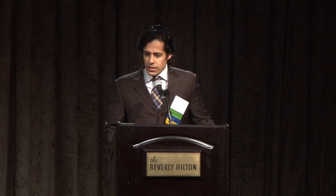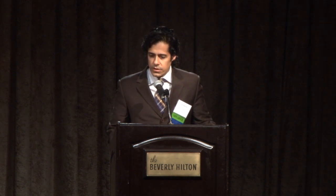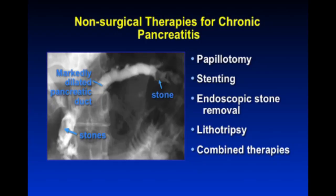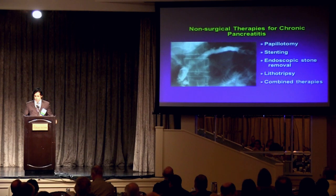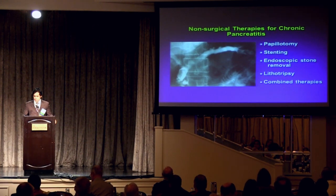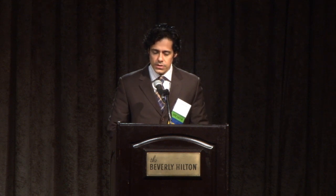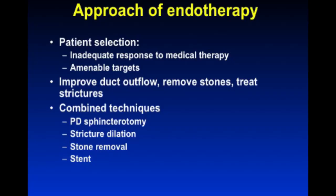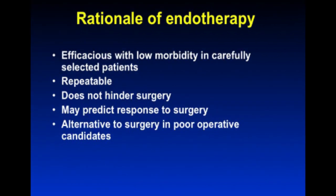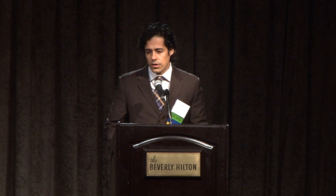What we have available for endotherapy is an array of interventions: pancreatic sphincterotomy, stricture stenting and dilation, stone removal, and stone destruction, with a combined approach most often taken. Patient selection is the most important thing — how severe is their pancreatitis, what is the etiology? The rationale for endoscopy: it works, it's repeatable, it doesn't hinder surgery, it may predict response to surgery, and it's a good alternative for patients with significant cardiovascular comorbidities or portal hypertension who are not good operative candidates.